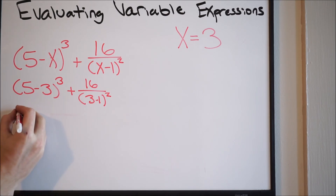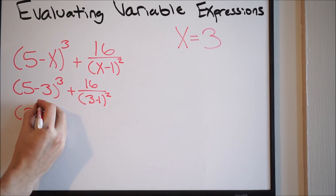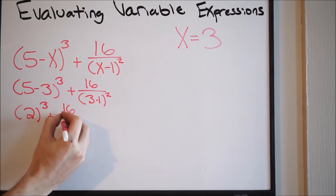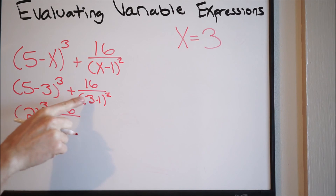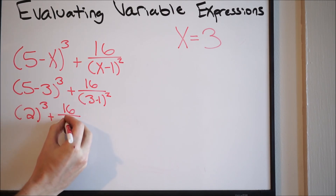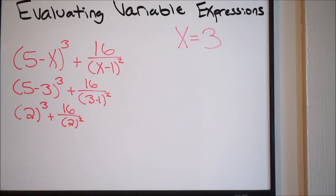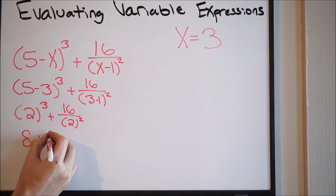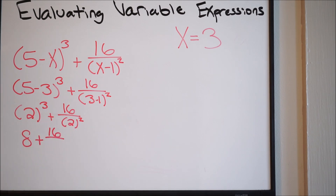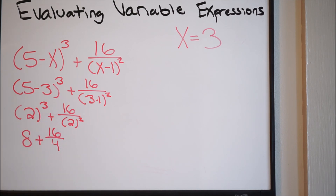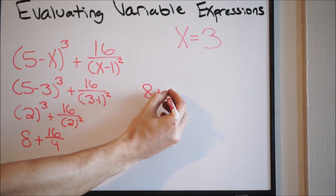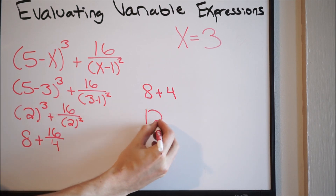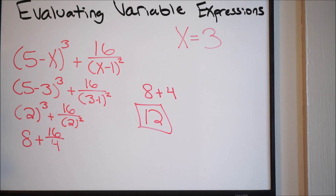5 minus 3 gives you 2, so rewriting, we have 2 cubed, plus 16 all over — and working the other parentheses, 3 minus 1 gives you 2 — so we have 2 squared. Now taking care of our exponents: 2 cubed gives you 8, and 2 squared gives you 4. So we have 8 plus 16 over 4. Taking care of the division, 16 divided by 4 gives you 4. So we have 8 plus 4, and the value of this expression is 12.